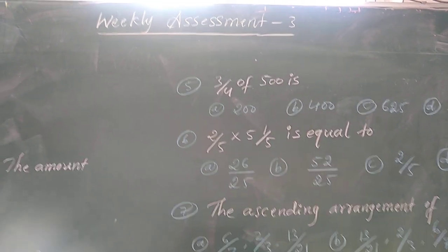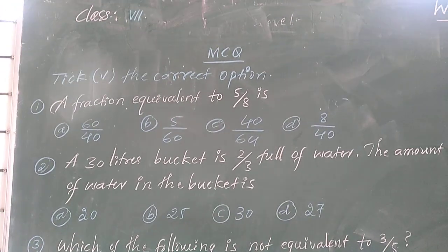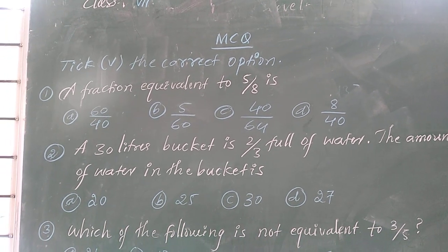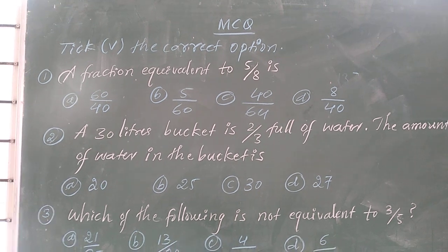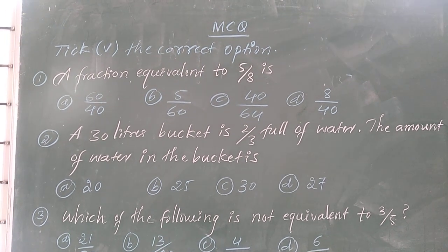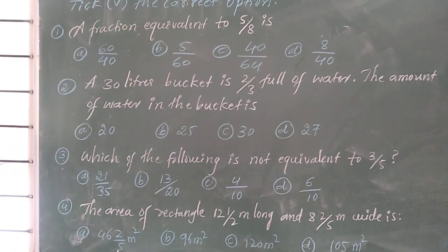Now this is Euclid assessment 3. Now see, in this week I have given the multiple choice questions from first to eight. There are eight questions. Tick the correct answer by circling the answer. Don't do it directly. You have to explain first and then you have to tick which is the correct answer.